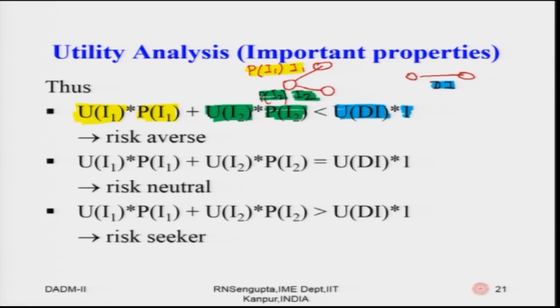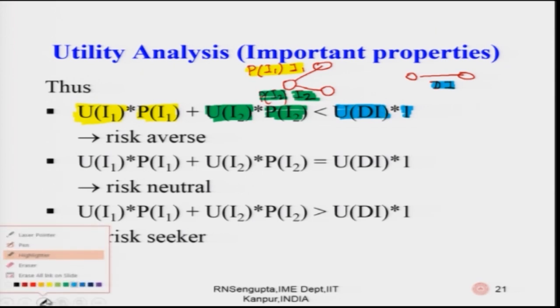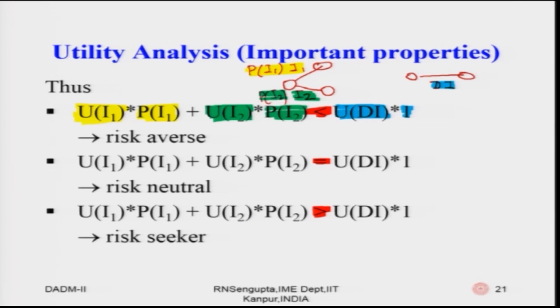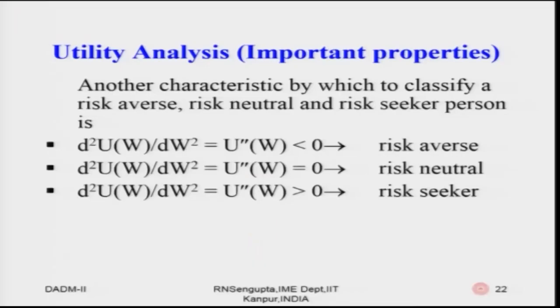Now consider the less than, equal to, and greater than signs. The equations on the left and right are the same for all three bullet points — only the inequality sign changes. If less than, I prefer the deterministic event — I want to avoid risk. If equal, I am indifferent. If the left-hand side is greater, I am willing to take the risk. This is exactly the problem discussed, where expected values may be the same but risk attitude determines the decision.